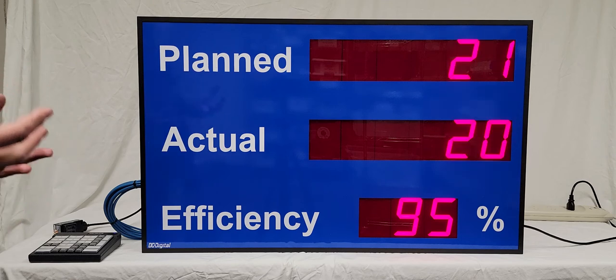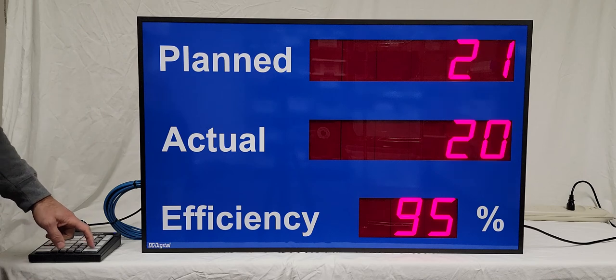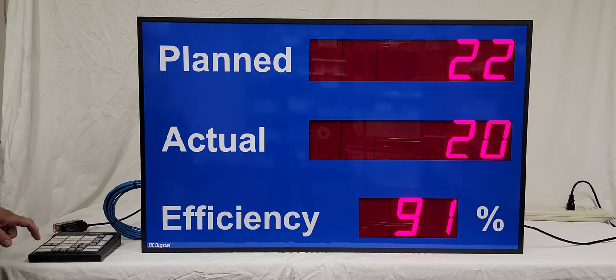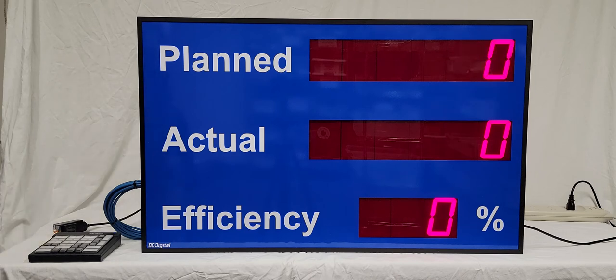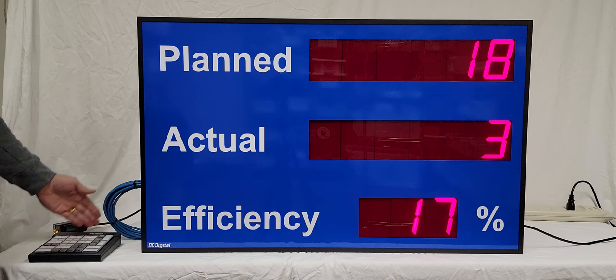Let me set it for parts per second. I'll hit stop, then set parts per second to five and hit enter. It's going to count pretty quickly, and you'll see the efficiency update as parts come in front of the sensor.